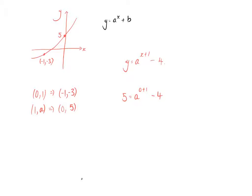So we add 4 to both sides, so 9 equals a to the 1, so that's just a equals 9. Therefore, this graph would have the equation y equals 9^(x+1) minus 4.